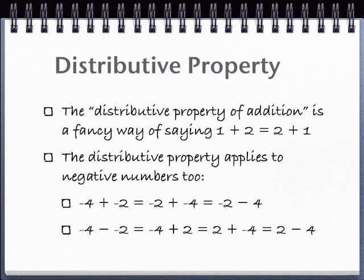So when you turn it into an addition problem like this, you can turn it around to be 2 plus negative 4, or 2 minus 4. No particular reason why you need to do this, it's just sometimes simpler that way.